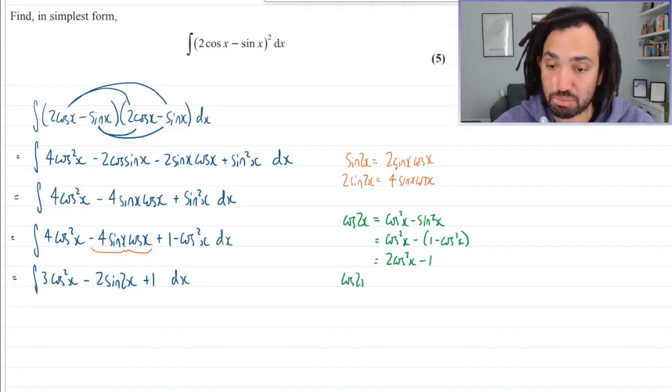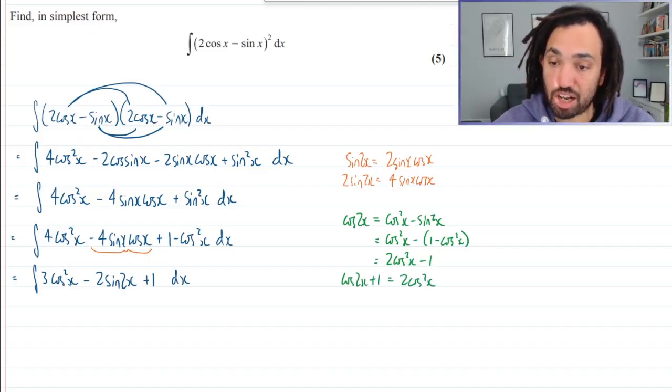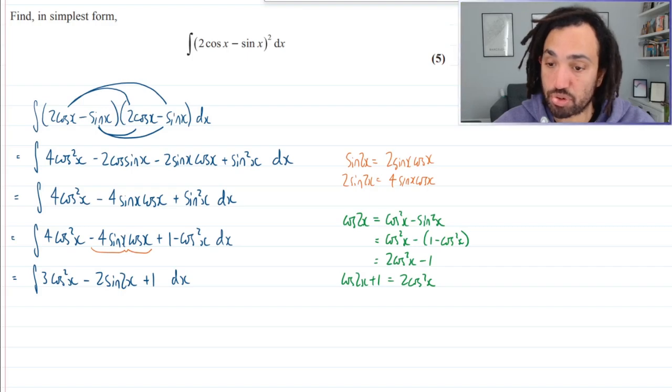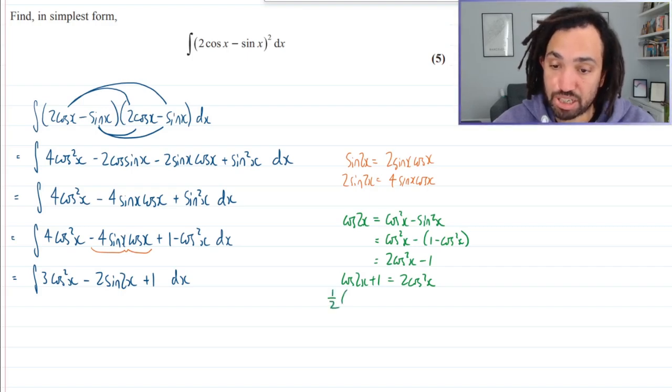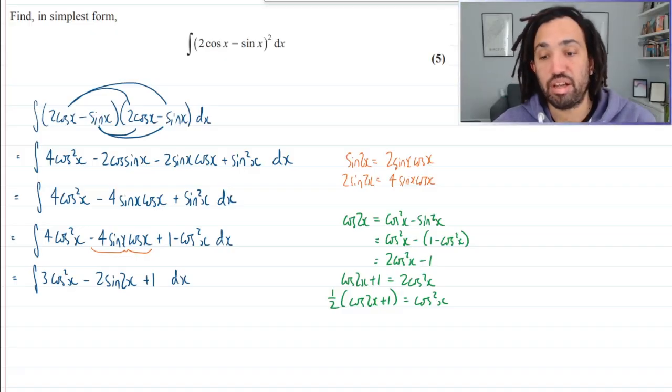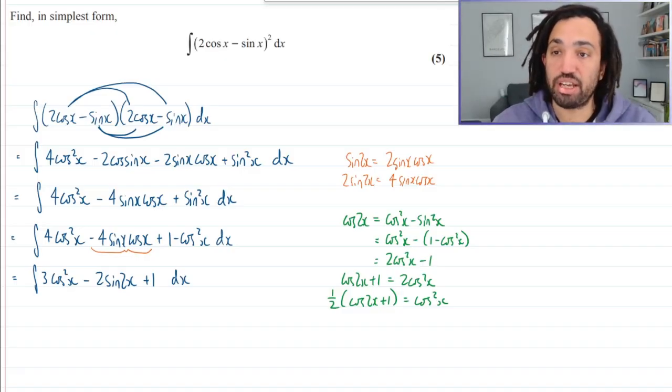Okay, let's rearrange for cos squared. I need to add 1 to both sides. And then I'm going to divide through by 2. So I'm going to get half of cos 2x plus 1 is equal to cos squared x. Okay, so that goes in over here.